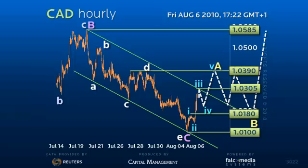A loss though of 101 the figure — the recent low — suggests a larger declining wedge to parity before higher.